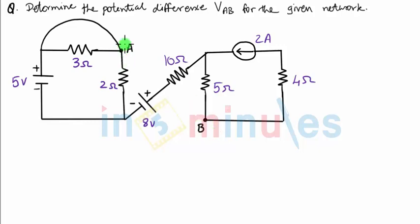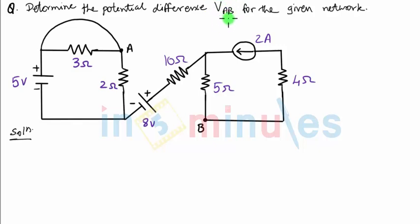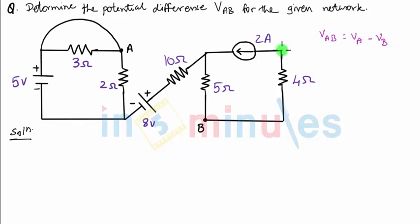We have to find out the potential difference between the two points. We have to remember that to find the potential difference between any two points, you first have to define that particular potential difference. For example, here it is being called VAB, because VAB and VBA will both be different from each other. Once we have defined the potential difference, VAB is nothing but VA minus VB.